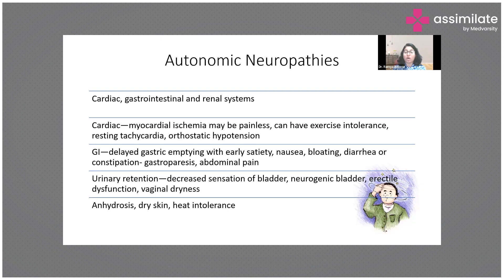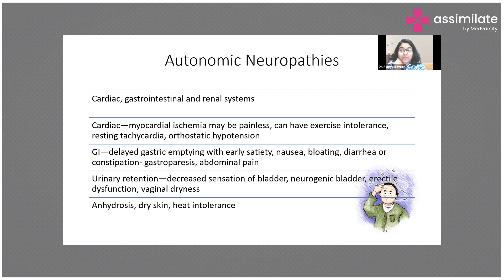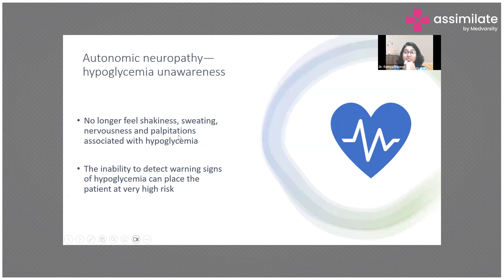Gastrointestinal involvement is also very common, causing delayed gastric emptying. Patients feel bloated, full faster, and may have nausea, vomiting, diarrhea, or constipation. Urinary symptoms include urinary retention, decreased sensation, and neurogenic bladder. Erectile dysfunction and vaginal dryness can also occur — erectile dysfunction is very common among patients with diabetes. Other symptoms include dry skin and intolerance to heat due to decreased sweating.